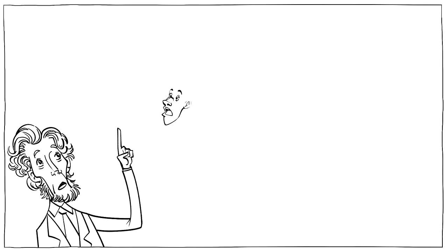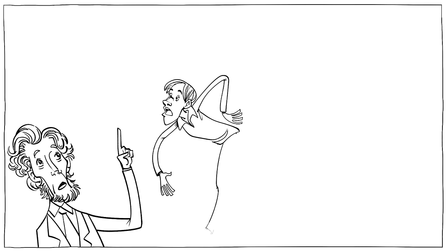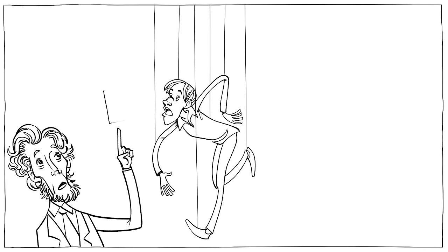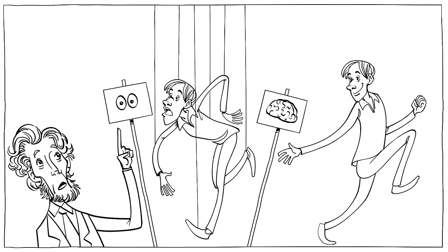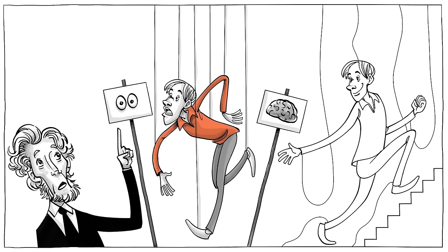Milgram himself left us with this to think about. It may be that we are puppets, puppets controlled by the strings of society. But at least we are puppets with perception, with awareness, and perhaps, our awareness is the first step to our liberation.